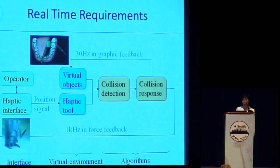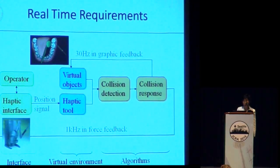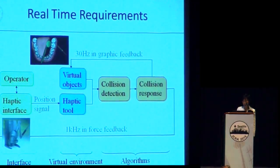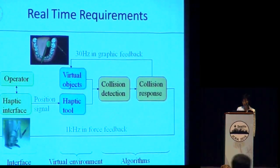This figure shows the haptic tool loop and the graphic loop. For realistic graphic display, an update rate of 30 Hz is sufficient. However, for a realistic sense of touch and stable force feedback, an update rate should be as high as 1 kHz. Such a high update rate poses a great challenge in many application cases.